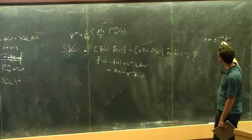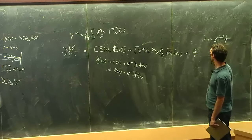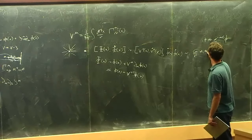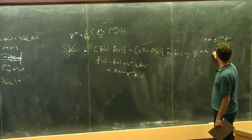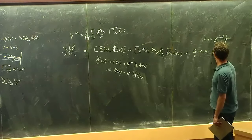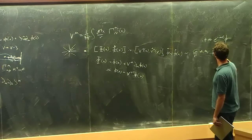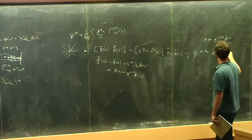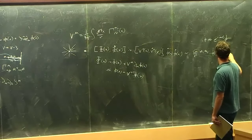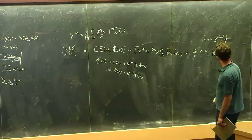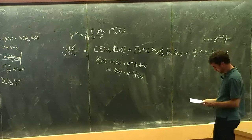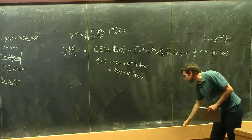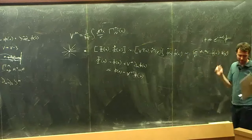Inserting the time dependence given by the mass, the commutator becomes proportional to G times M1 times M2, modulated by phi(X). That's basically the result: gravitationally dressed scalar operators fail to commute in a way proportional to the Newtonian gravitational potential between the particles.